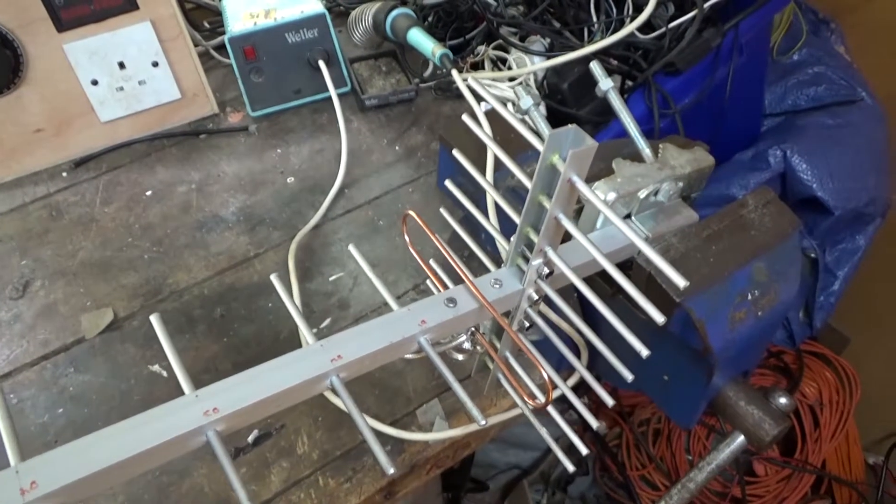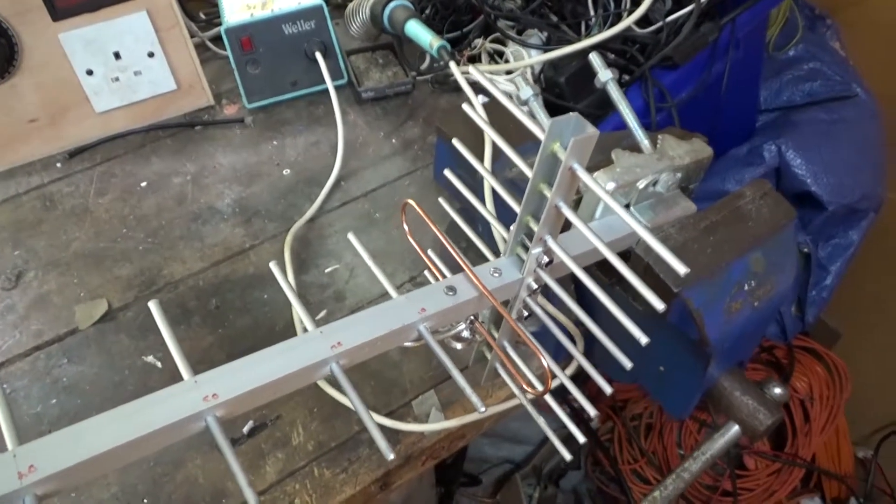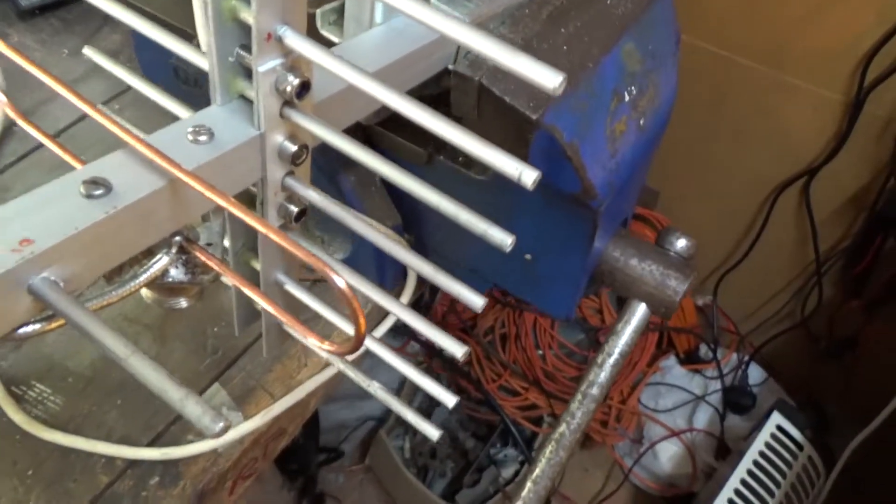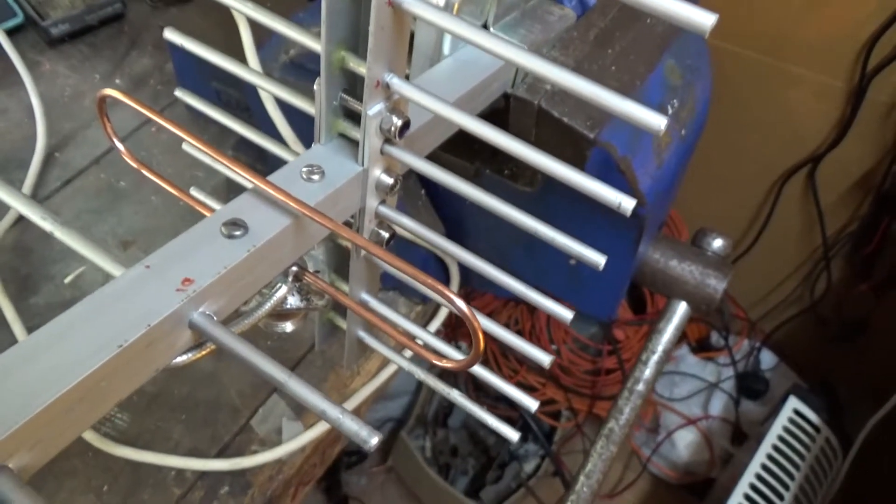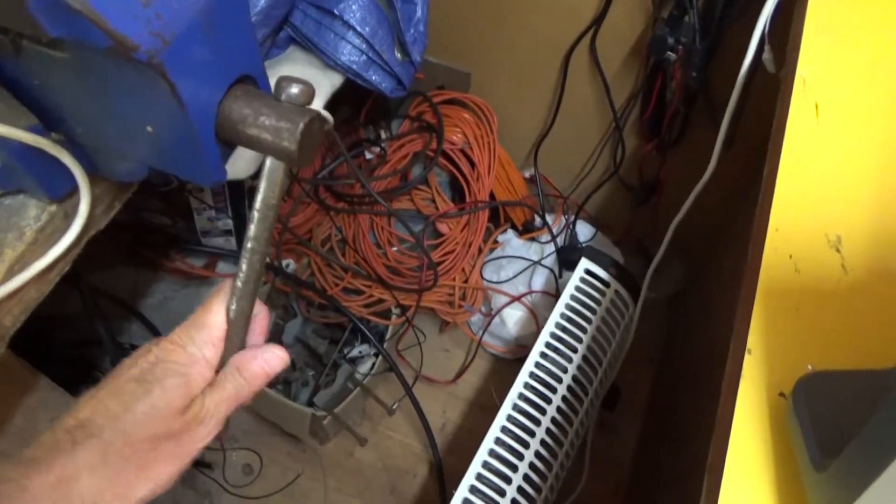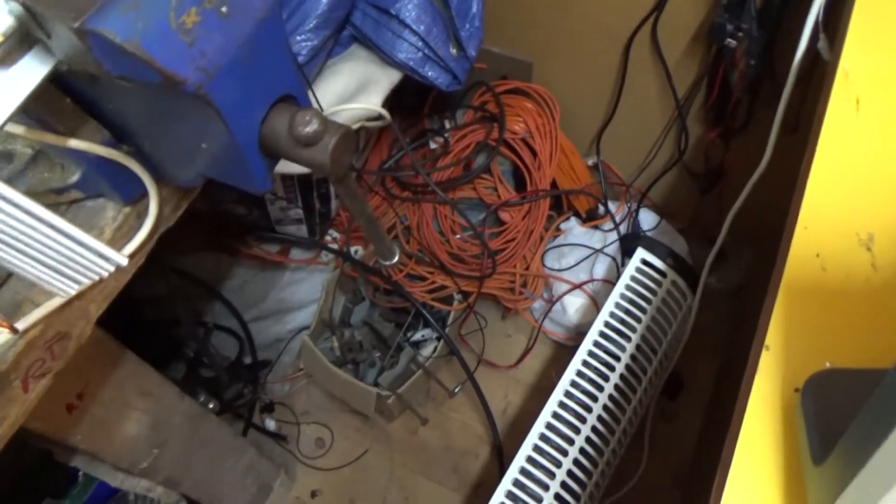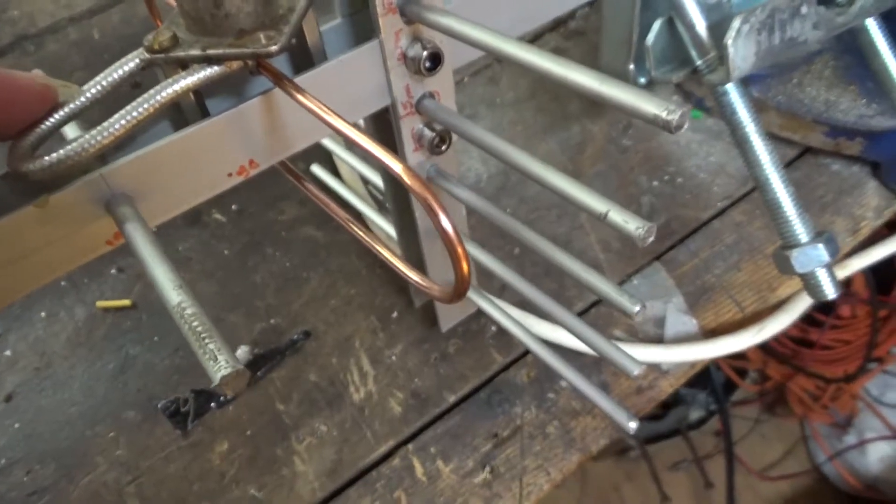The whole aerial has cost me probably about 20 pounds. If we look at the driven element or folded dipole, it's made of two millimeter copper wire and that came out of a bit of old coax. If I show you the bottom of it, you can see what it looks like.